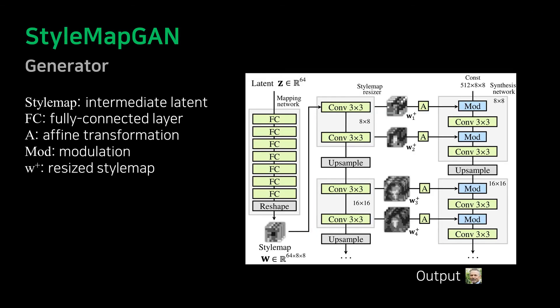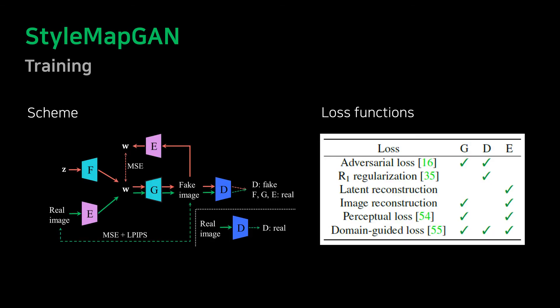Our generator looks similar to the original StyleGAN at a glance, but most of the modules change to exploit the spatial feature of StyleMap. Please check our paper for further details. We jointly train our networks with various important losses. The tick marks in the table show which network's update is involved in each loss.